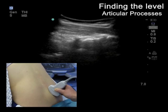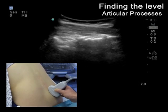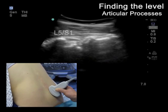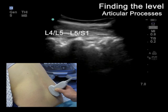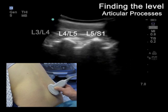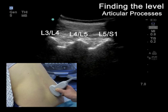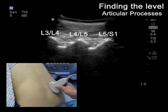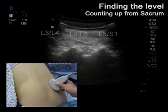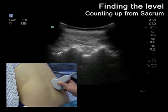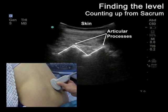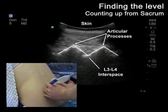Moving laterally, identify the articular processes of the lumbar vertebrae. These have a typical sawtooth appearance. The most caudal articular process visible is L5, S1. Move cranially, identifying the articular processes of L4, L5 and L3, L4 and their corresponding interspaces. Keeping the L3, L4 interspace in the middle of the image, mark the patient's back.